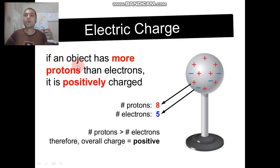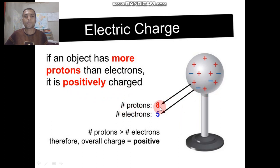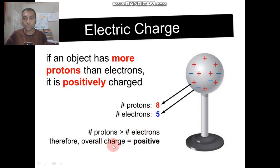On the other hand, if an object has more protons than electrons, then it is positively charged. For example, in this figure the number of protons is 8 and the number of electrons is 5. The number of protons is greater than the number of electrons, therefore the overall charge is positive — this material is positively charged.